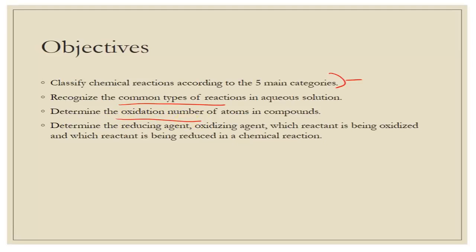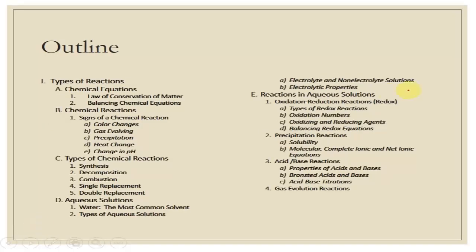We're going to do that for atoms and compounds, and I'll show you how I do that. Then we're going to look at reducing agent, oxidizing agent, what's being oxidized, what's being reduced, and that kind of thing. So we're really going to be focusing on redox reactions — how do you identify them, how do you know, and then talking about the details of those reactions.